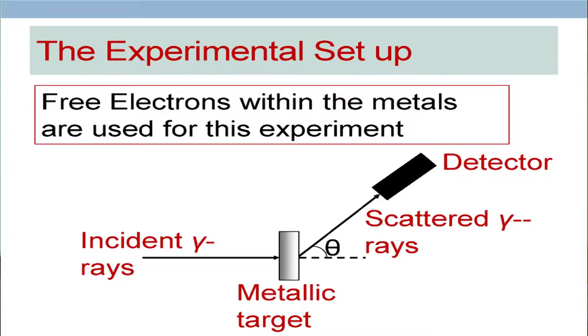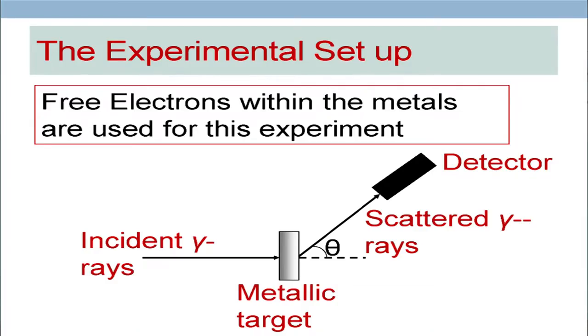So what we do: we have a metallic target and there is an incident gamma ray beam coming and hitting this particular target. Then we put our detector at an angle theta from the incident direction of the gamma rays and start counting. There are many types of detectors — scintillation detectors and others — from which you can count the number of photons. You can find out in a given time how many photons have been coming at that particular angle theta, and you can also find out their wavelength or energies.